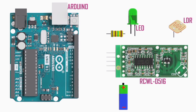Connecting the sensor to Arduino: 3V3 — do not connect. GND to Arduino ground. OUT to pin 12, or any other digital pin of your choice. VIN to 5V, or any voltage between 4V to 28V. CDS — do not connect, or connect an external LDR depending on your requirement.